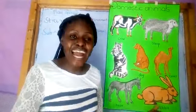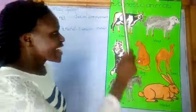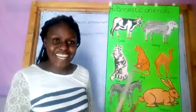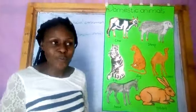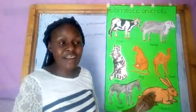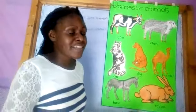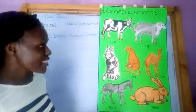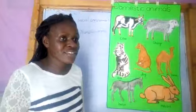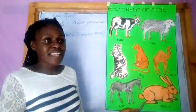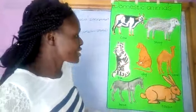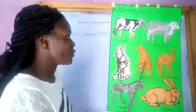Domestic animals. These are animals that are kept at home. These are animals that we see every day in our homes, or when you are walking around the neighbourhood. These are the animals that we keep at home.